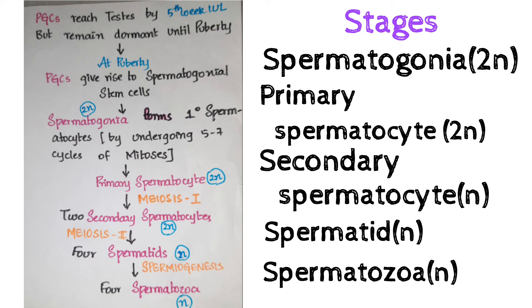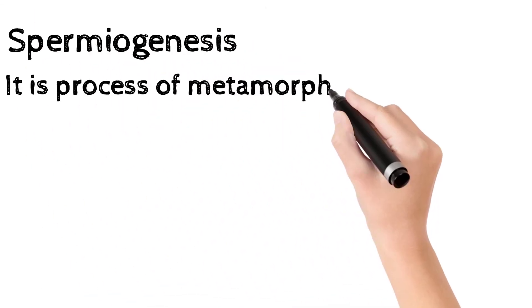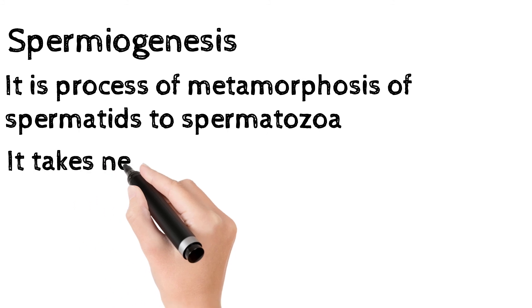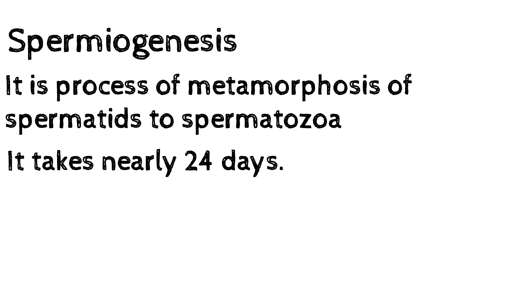Two secondary spermatocytes undergo meiosis II to form four spermatids. Each secondary spermatocyte forms two spermatids, which now undergo spermiogenesis to form four spermatozoa. Spermiogenesis is the process of metamorphosis of spermatids to spermatozoa, and it takes 24 days.